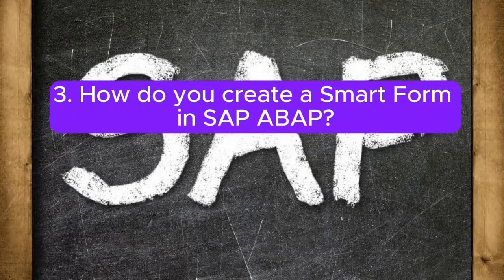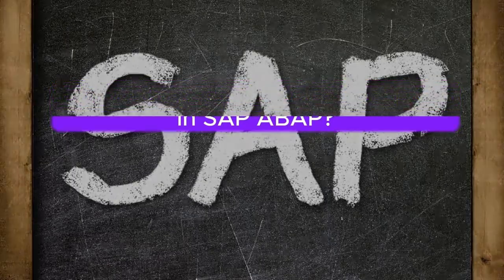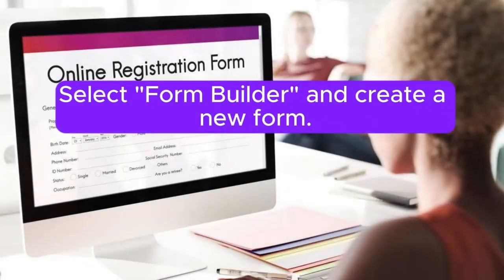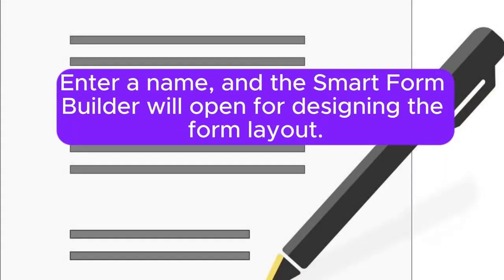3. How do you create a SmartForm in SAP ABAP? Answer: To create a SmartForm, use the transaction SmartForms. Select FormBuilder and create a new form. Enter a name, and the SmartForm Builder will open for designing the form layout.